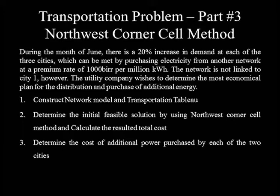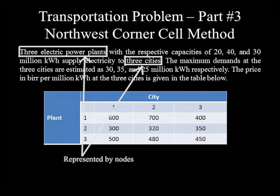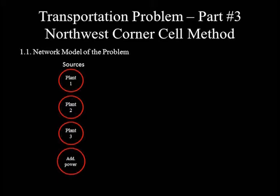Let's start by constructing a network model. A network model contains nodes for each source and destination, and arcs for the routes from sources to destinations, to convey information about transportation cost and amounts shipped. In constructing a network model, nodes representing sources are arranged from top to bottom at the left-hand margin. In this question, we have four sources: three power plants and the external network.